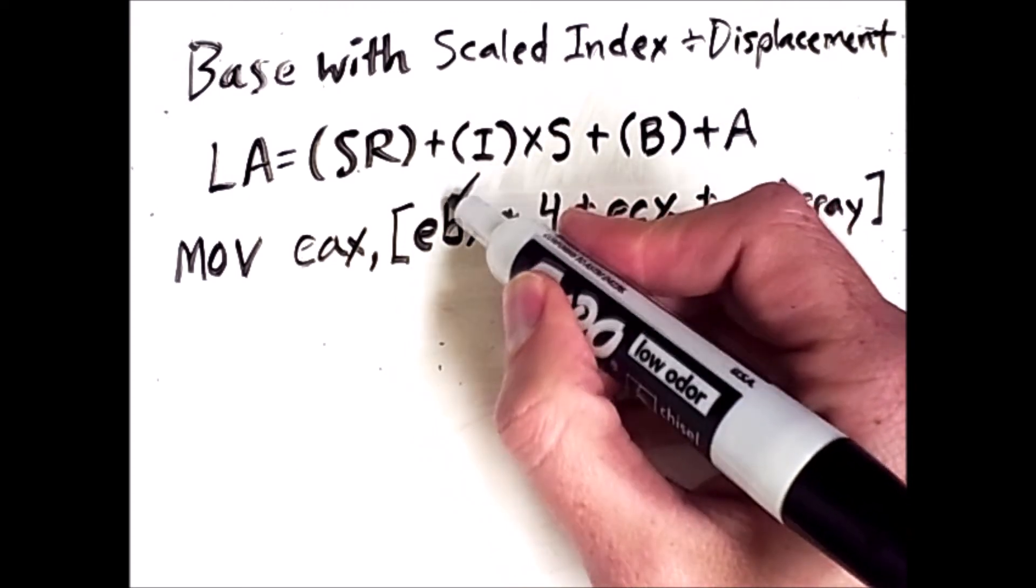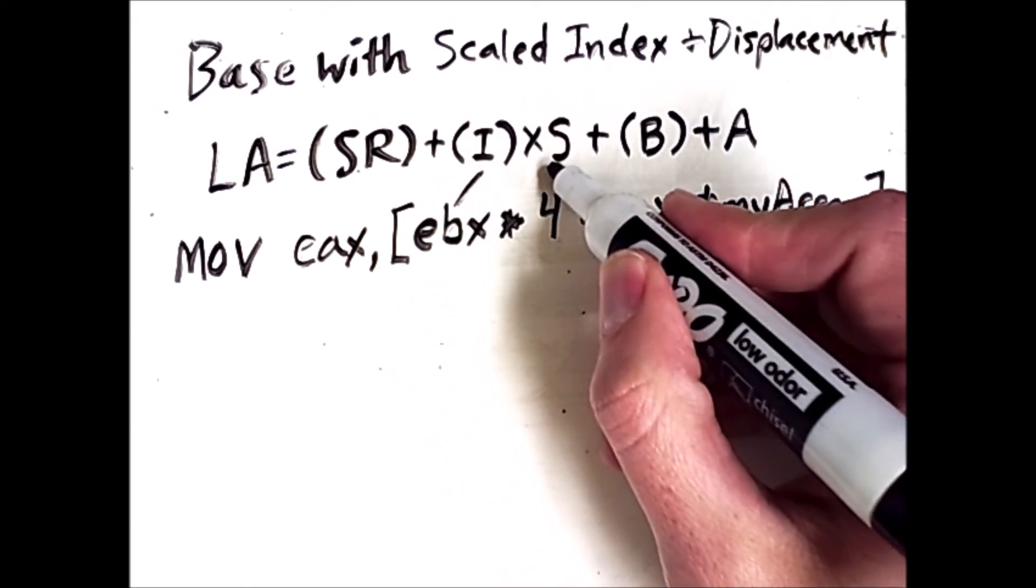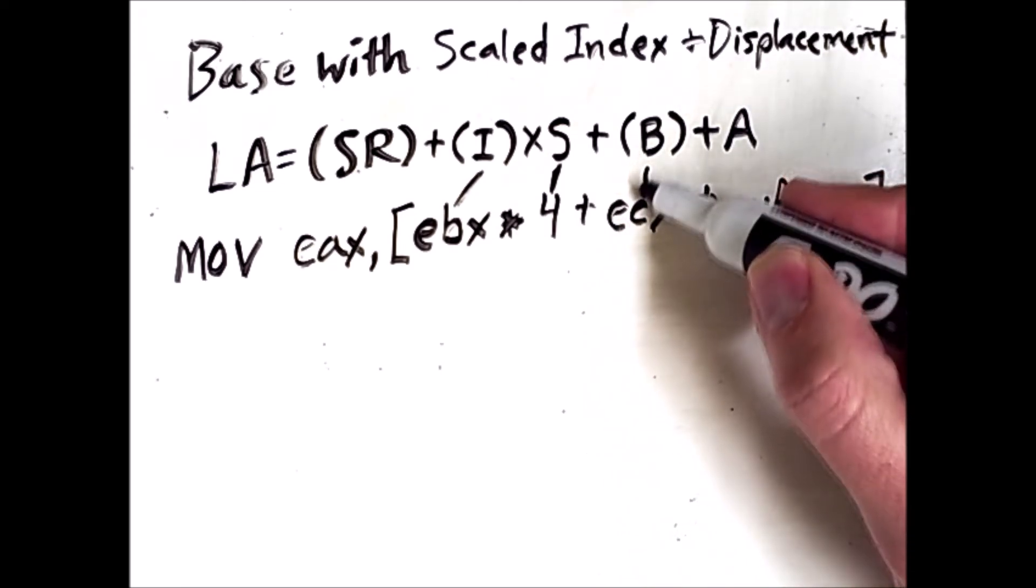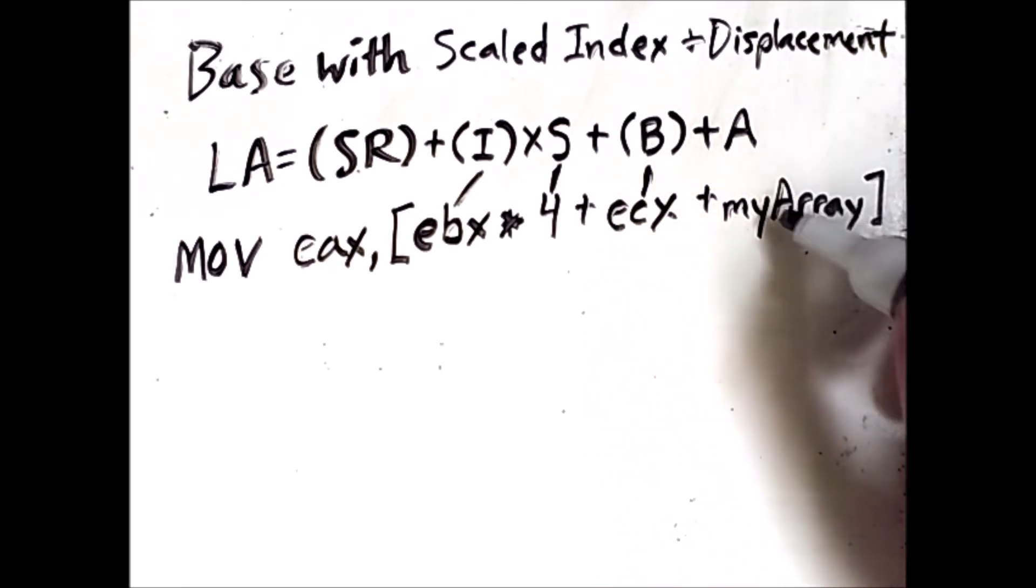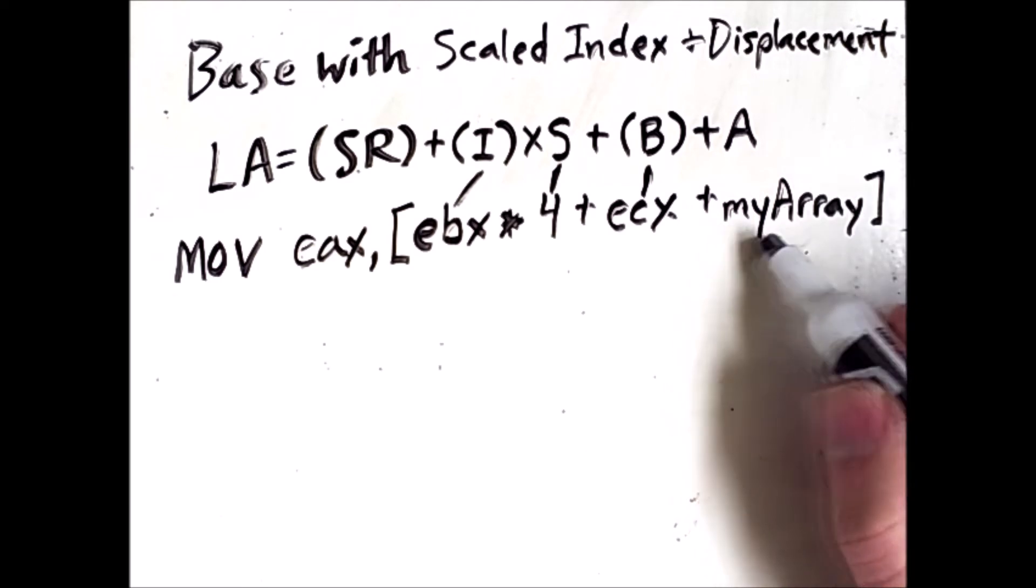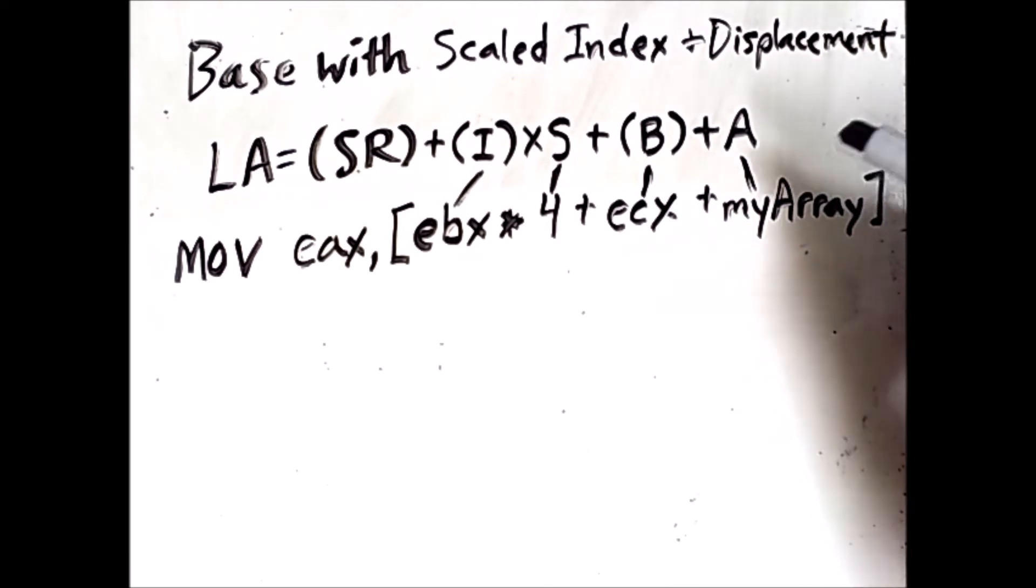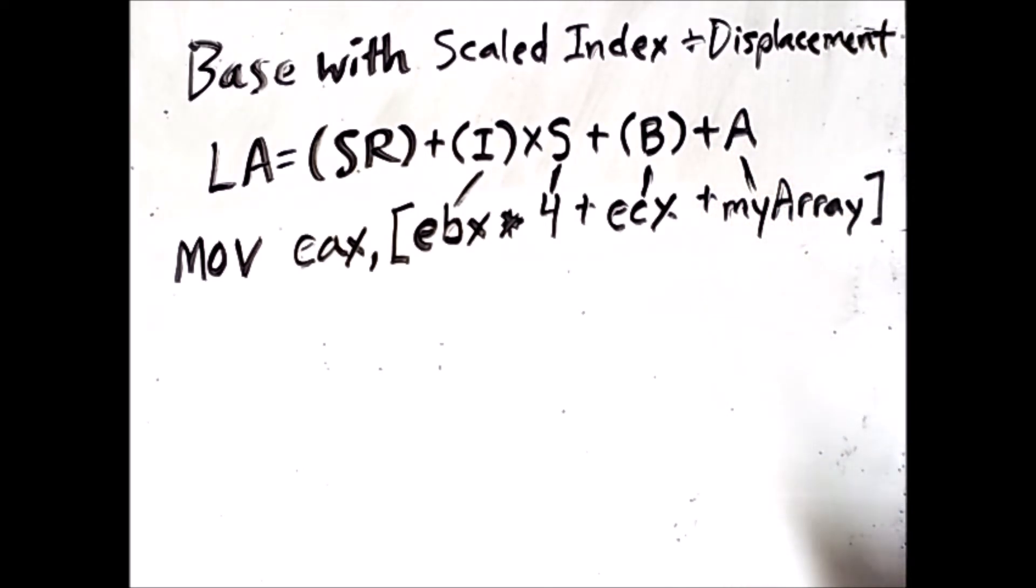EBX is the index register, 4 is the scale factor, ECX is the base register, and this symbol, myArray, is the address A. And so this is the most complex addressing scheme we have in x86.